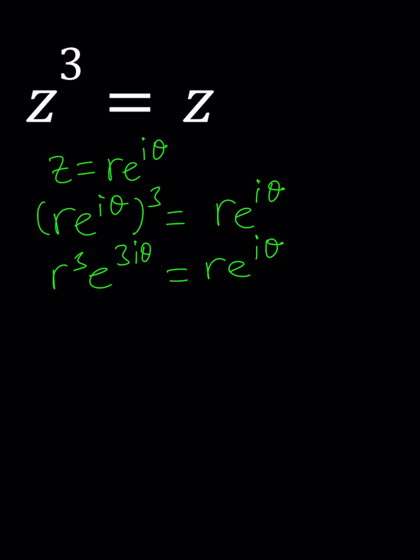Does that mean 3iθ equals iθ, and then iθ cancels out and 3 equals 1? Or does that mean iθ equals 0 and theta equals 0? Well, we've got to be very careful here because in this case you can multiply one side by e^(2πi), which is basically 1 in the complex world, and then kind of go from there.